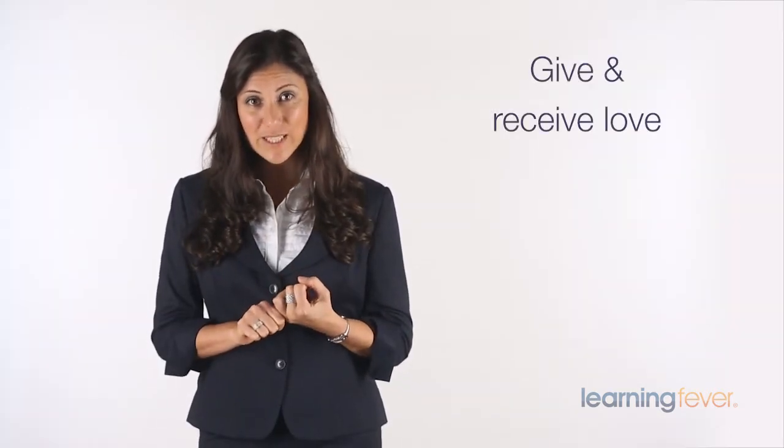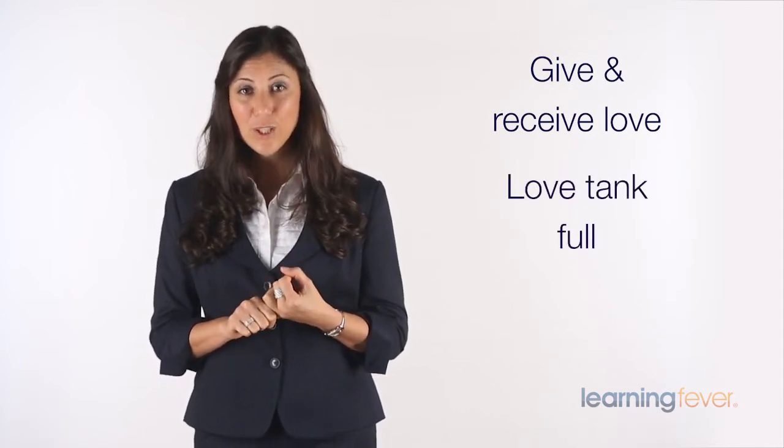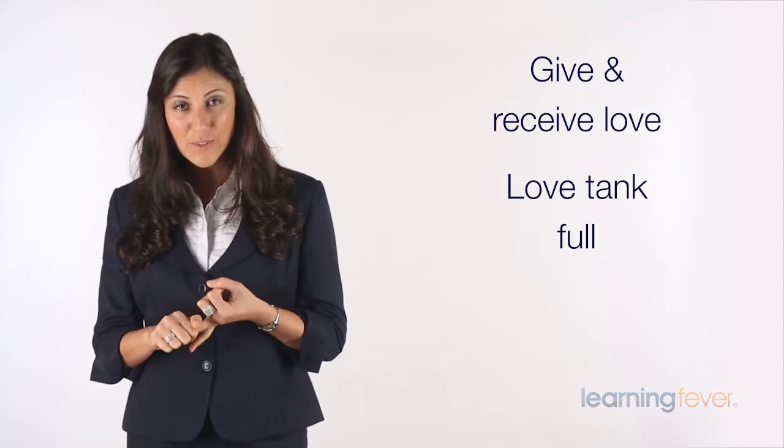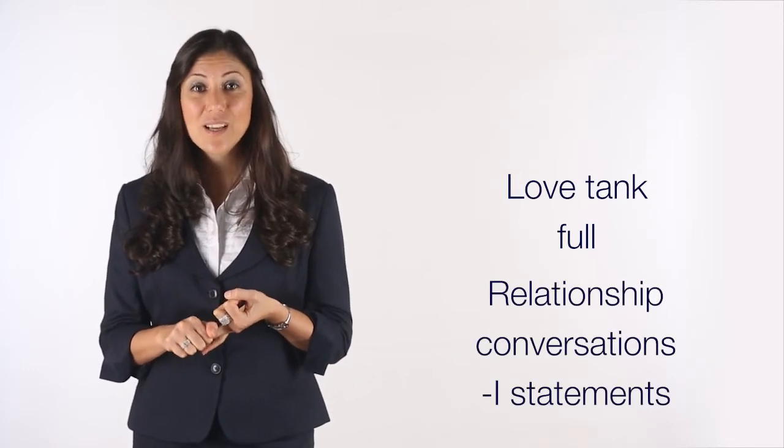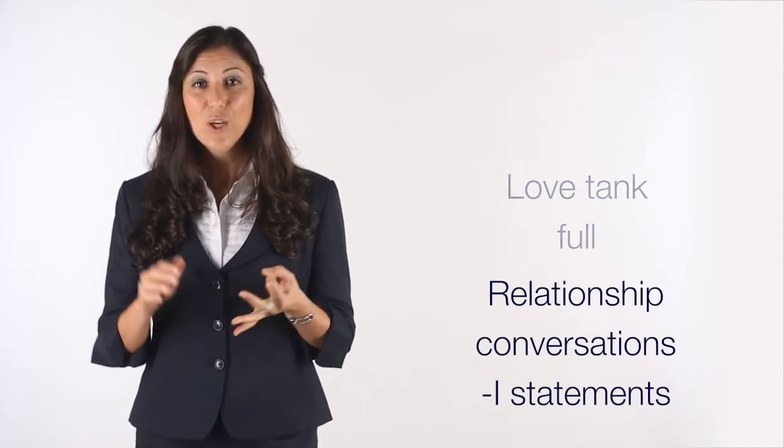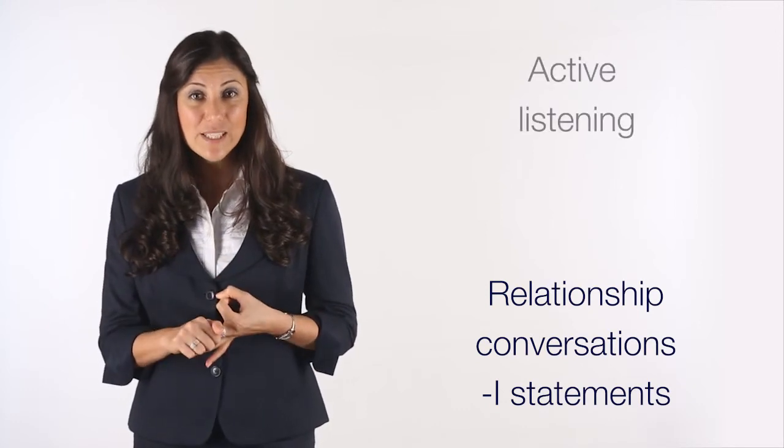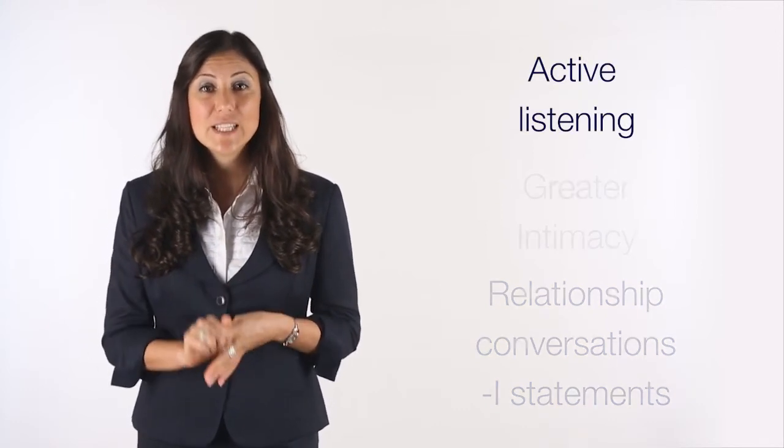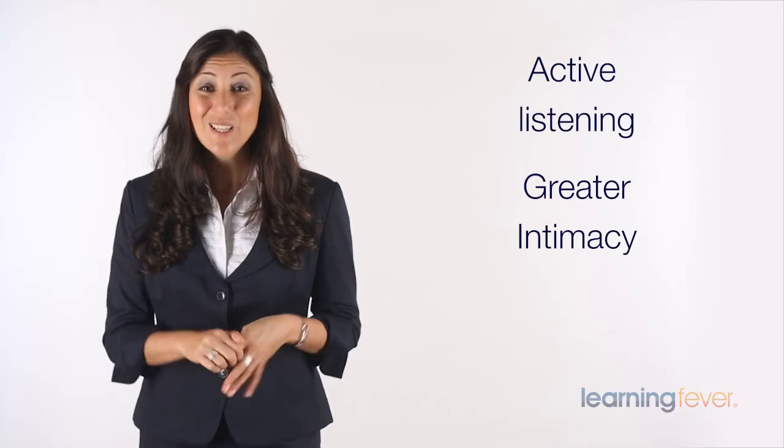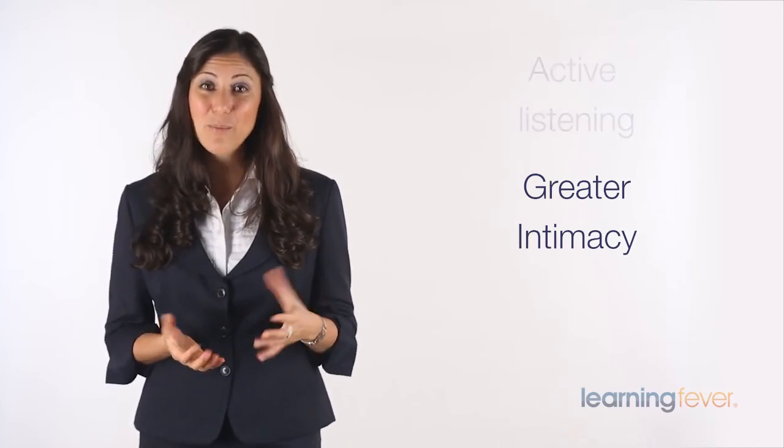So we've covered a lot of ground so far and I'd like to recap on what we've discussed. We've looked at the different ways people give and receive love and how to keep your partner's love tank full. We've talked about relationship conversations and how to use I statements. We've also learnt about active listening and how to have greater intimacy in your relationship. So that's a fair bit of information and practical skills to help improve your relationship, and we've still got more to go.